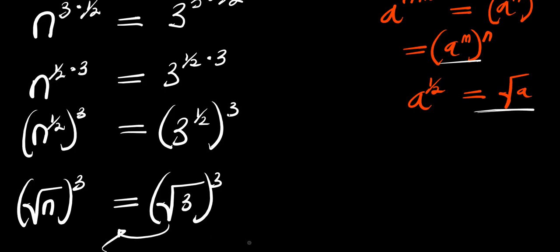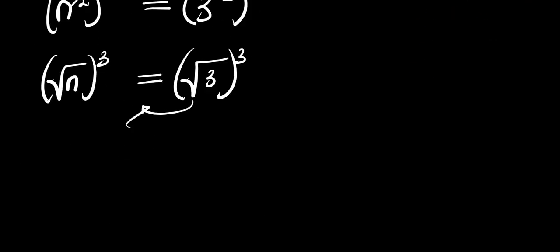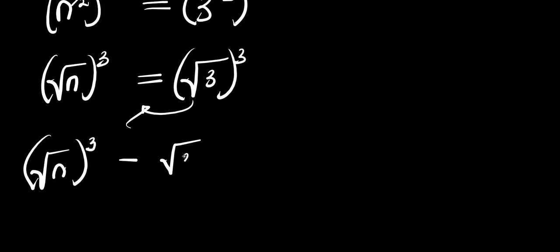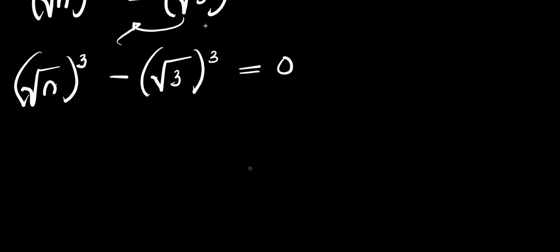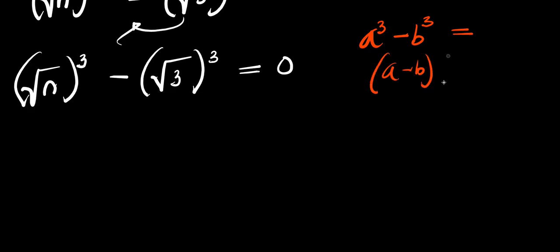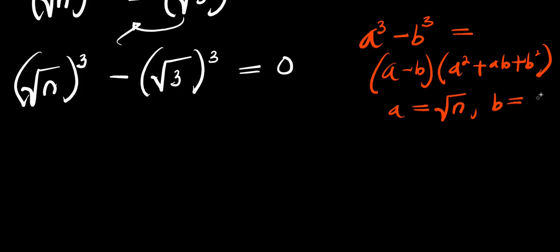So we move this over here, and this will give us: square root of n raised to the power of 3, minus square root of 3 raised to the power of 3, equals 0. So let's consider this identity: if you have a³ minus b³, this equals a minus b, times a squared plus ab plus b squared. In this case, our a is square root of n, and b is square root of 3.